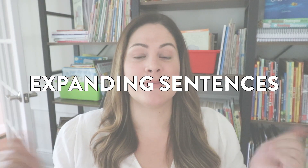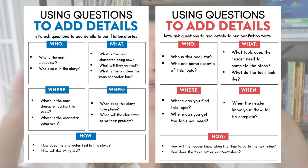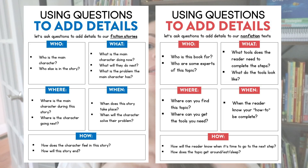Strategy number two for integrating writing into other subject areas is to use an activity called expanding sentences. Generally, I teach students how to expand different sentences by adding more details. In my sentence writing unit, it looks like this, but that is usually within the context of writing itself. This is a very simple activity to get students doing across all different subjects. I like to have students do this by asking the question words, using an anchor chart that looks like this, and walking through those question words to take a simple sentence and add details to make it a super sentence.